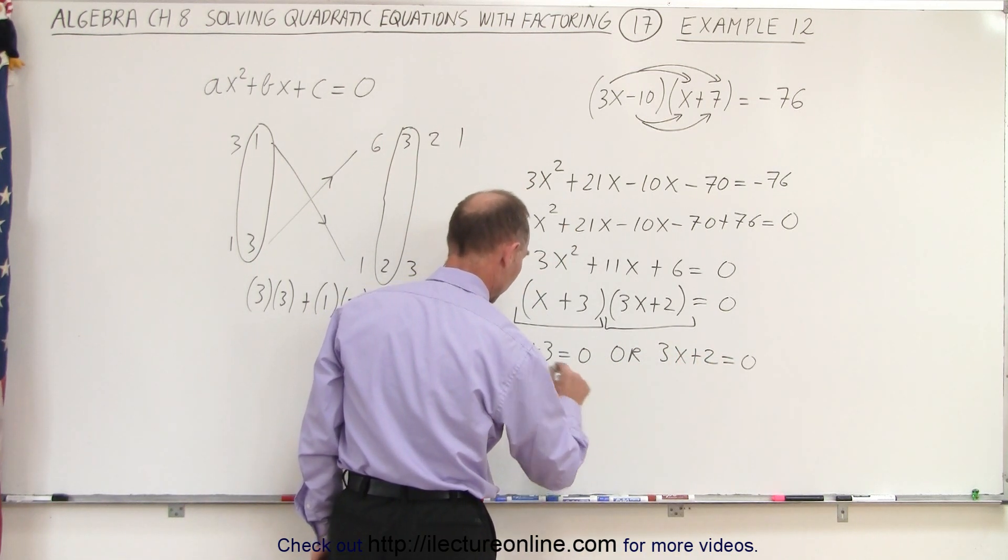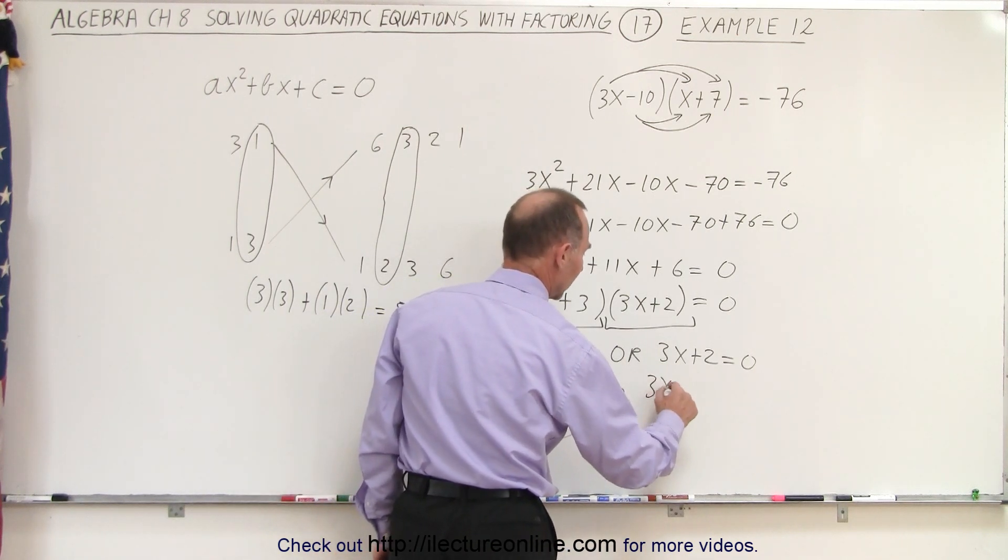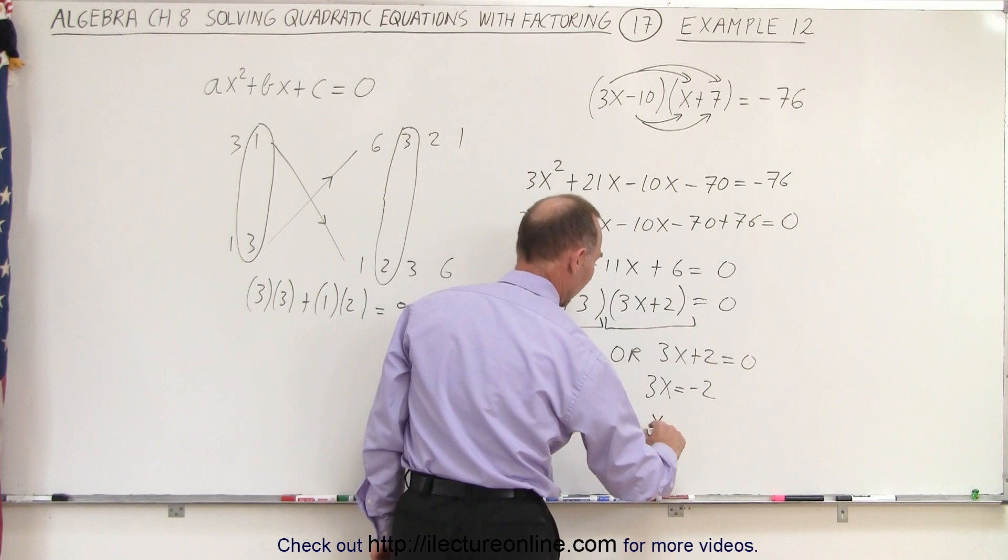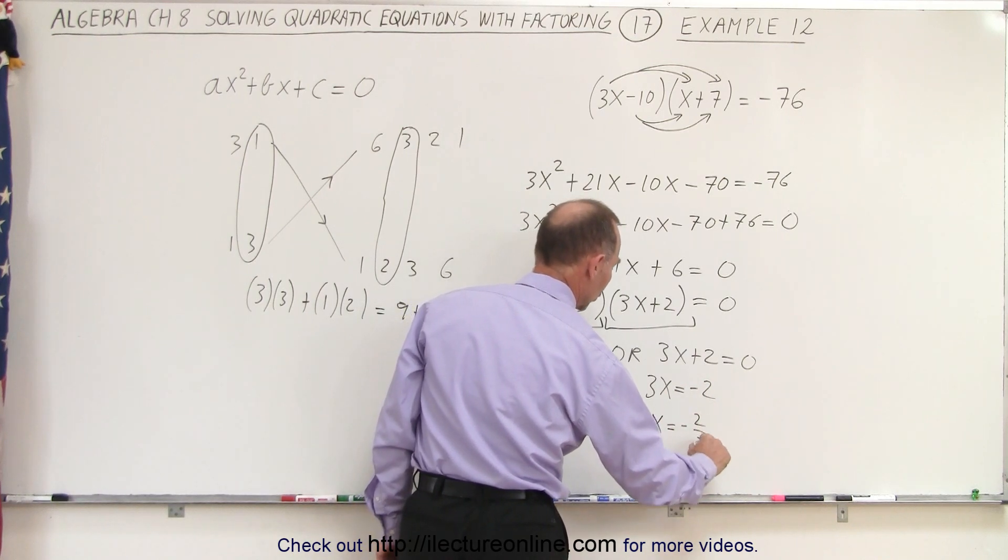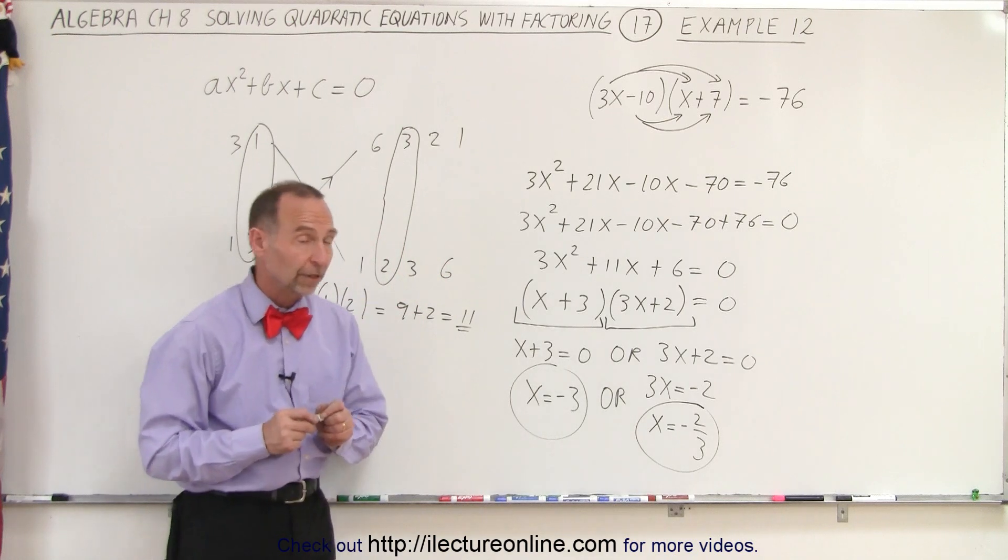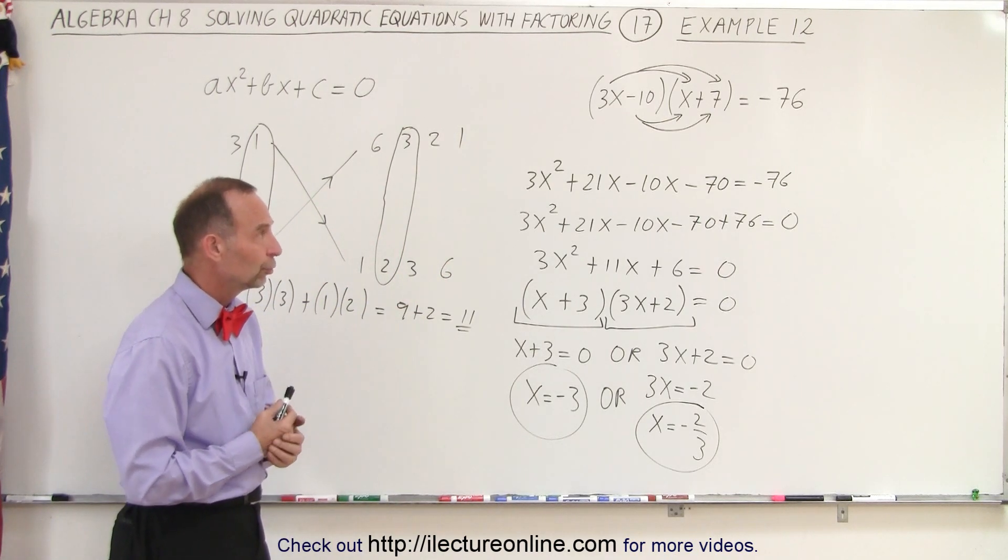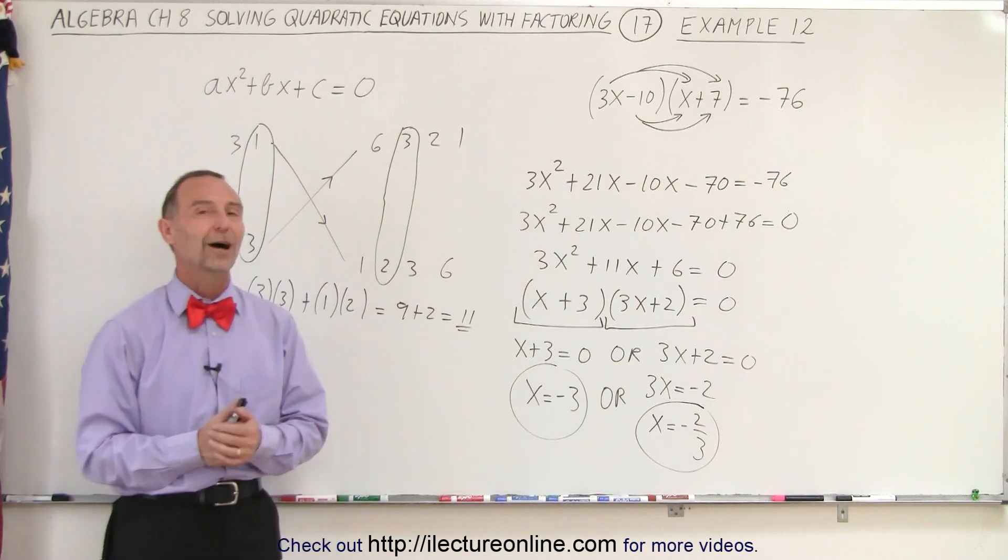Which means in one case, we have x equals negative 3 as one possible solution, or we have 3x equals negative 2, or x equals negative 2 thirds, and there's the other possible solution. So either x equals negative 3, or x equals negative 2 thirds, and that is how it's done.